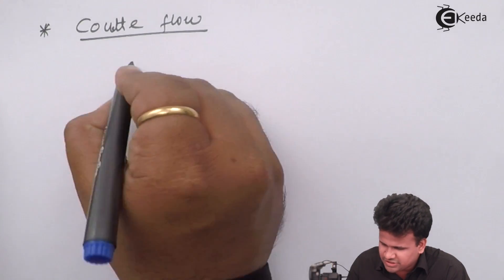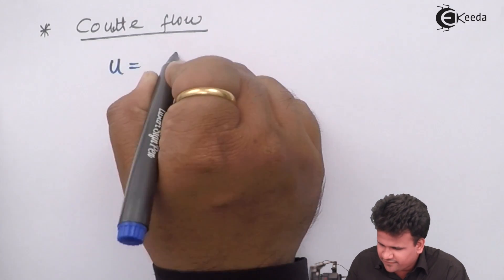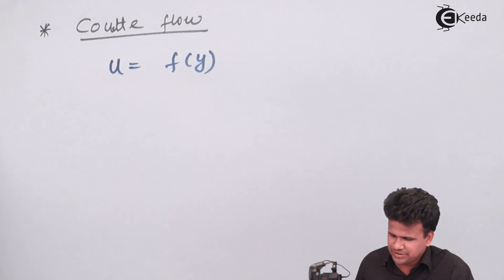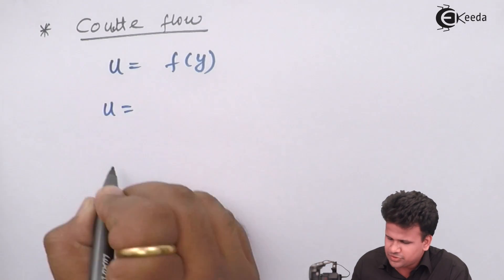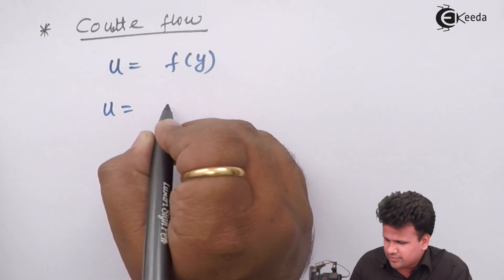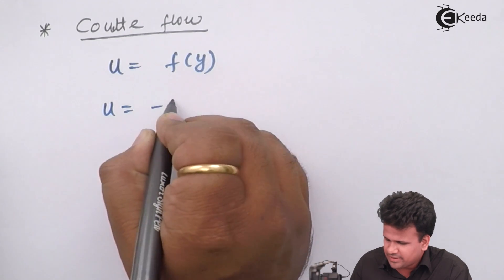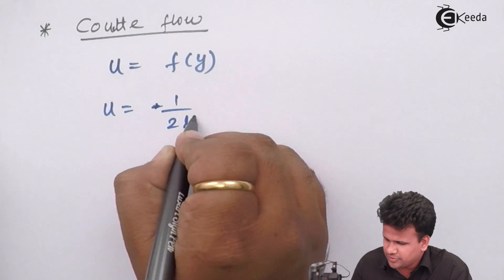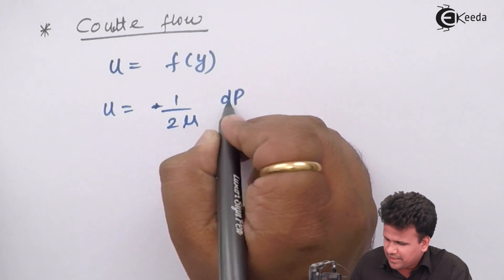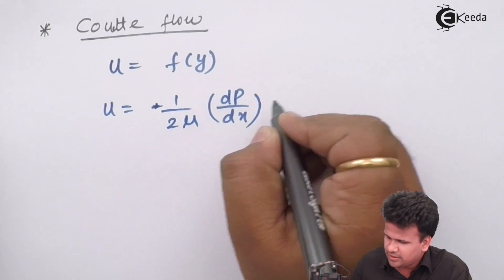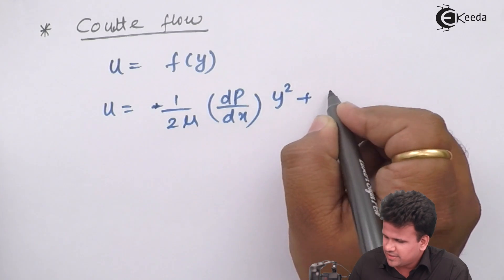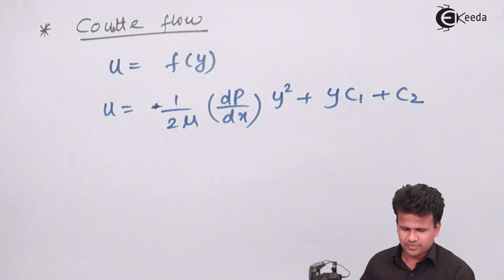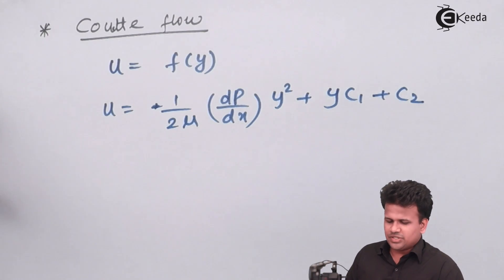We have initially obtained u as a function of y, which is the solution of the Navier-Stokes equation: u = (1/2μ)(dp/dx)·y² + y·c₁ + c₂.